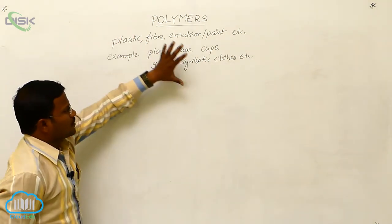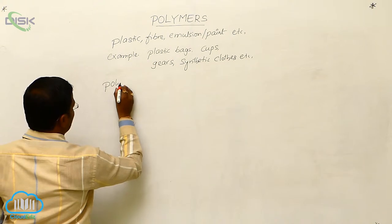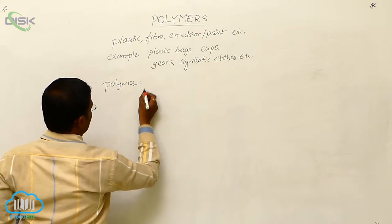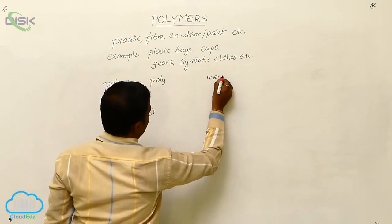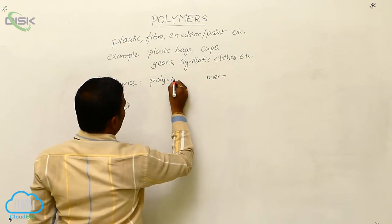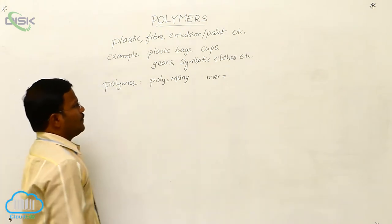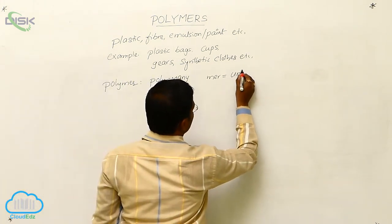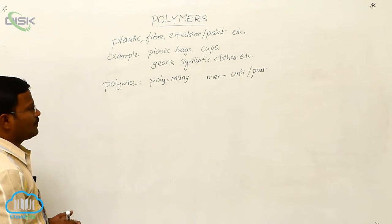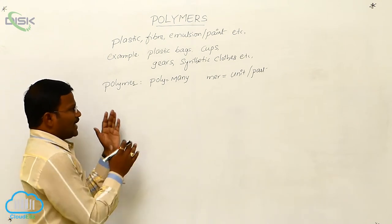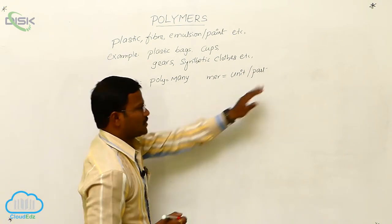The word polymer is derived from two Greek words: poly and mer. In the Greek language, poly means many or more, and mer means unit or part.